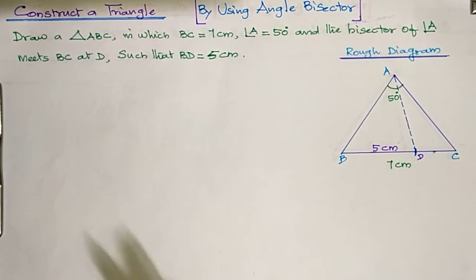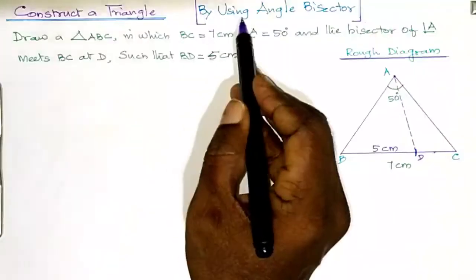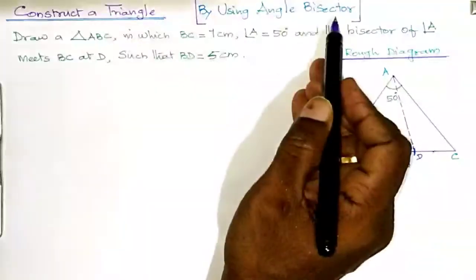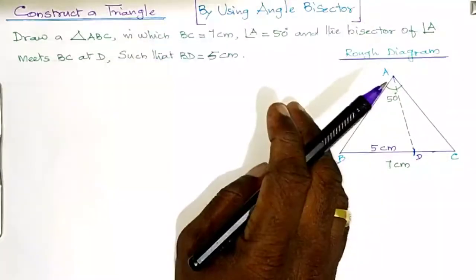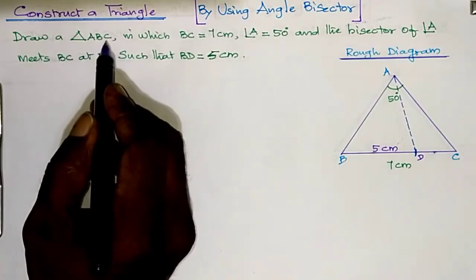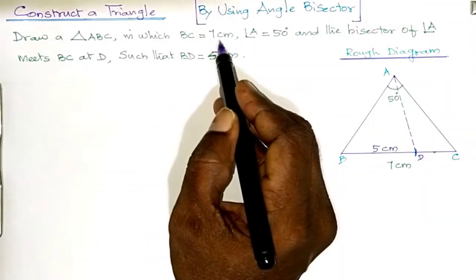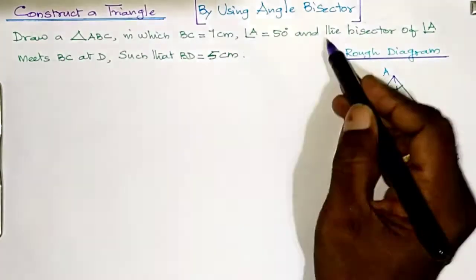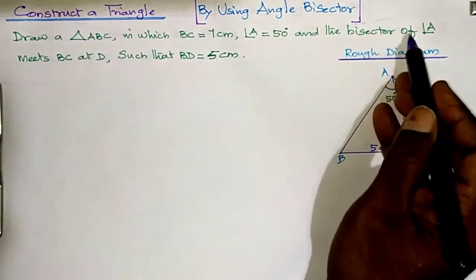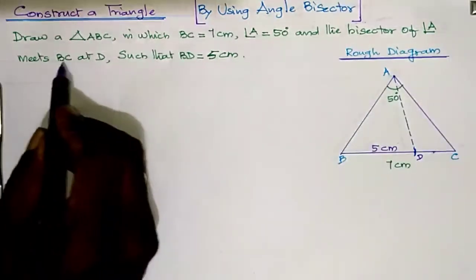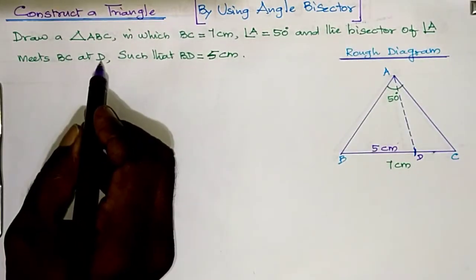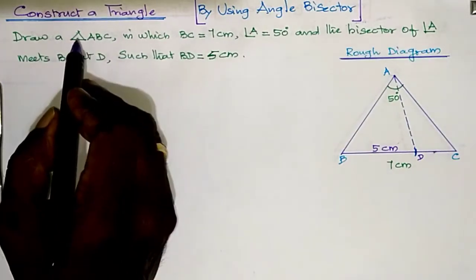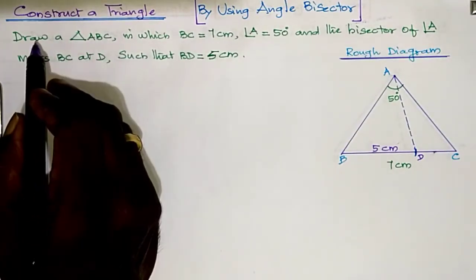Dear students, construct a triangle using an angle bisector. This is one of the triangle constructions where you use an angle bisector. Construct triangle ABC in which BC is equal to 7 cm, the vertical angle at A is equal to 50 degrees, and the bisector of angle A meets the base BC at point D such that BD is equal to 5 cm.